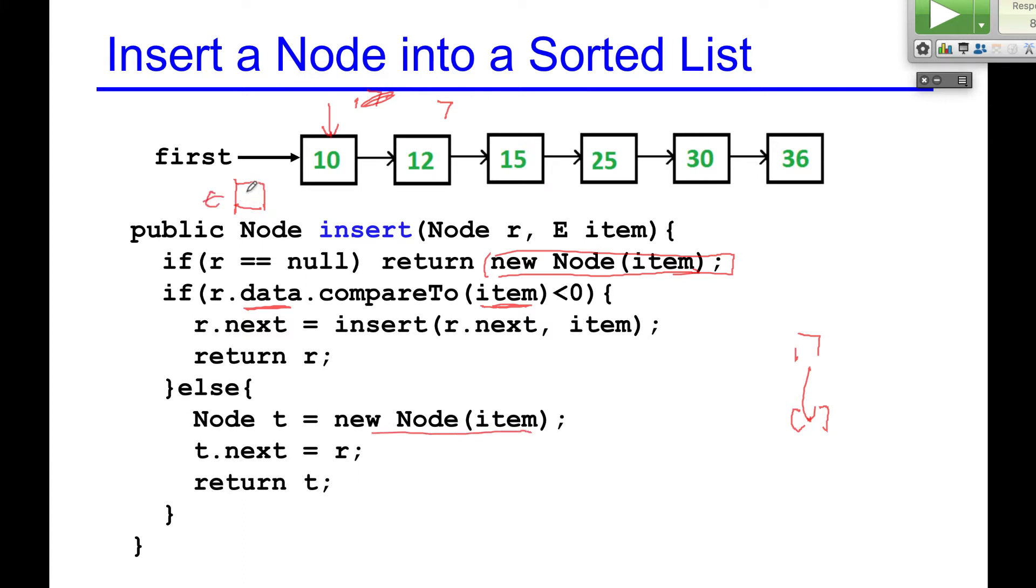T next, this is 7. T next is going to be R. This is my next. And then I will return this T. Then that will be your head. That means 7 you just put in front of 10. That's easy case.